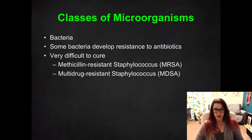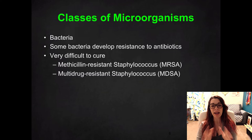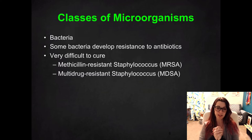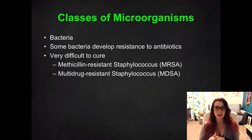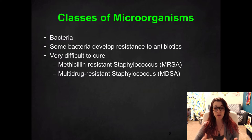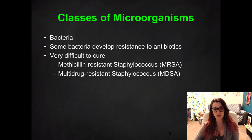Some bacteria develop resistance to antibiotics, and the mechanism for that is what we're going to talk about next week. Antibiotic resistance makes it very difficult to cure those bacteria. Examples include methicillin-resistant Staphylococcus, which we call MRSA, or multi-drug-resistant Staphylococcus, which is MDSA. Another one we've talked about in pathophysiology is antibiotic-resistant tuberculosis. We're going to be talking a lot about those resistant bacteria strains in a project we'll start pretty soon.